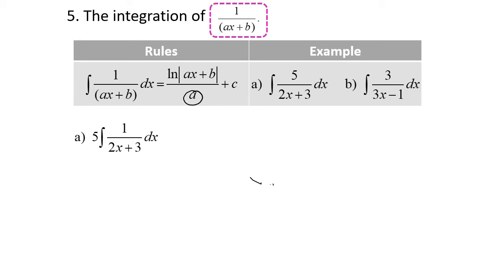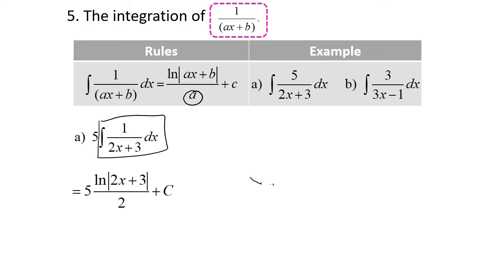First, we have to factorize 5 outside the integral. Then we know that when we integrate 1 over 2x plus 3 dx, we're going to have ln|2x plus 3|, and then divided by 2, because the coefficient of x is 2. Then plus c. So our final answer is 5 over 2 ln|2x plus 3| plus c.